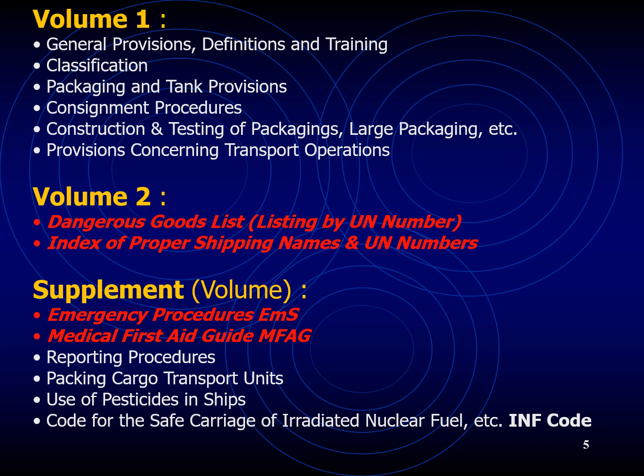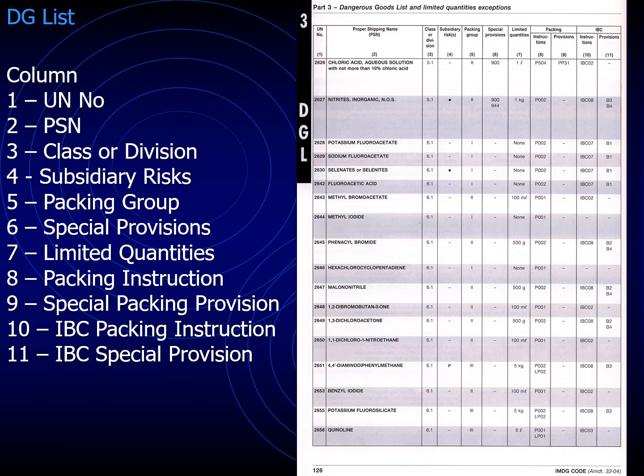The supplement is the third section apart from the two volumes. It provides other important information you need to be very familiar with, such as emergency procedures, medical first aid procedures, reporting procedures, and use of pesticides on ships. If you are a chief officer or senior officer and your ship will be carrying dangerous goods, you also have to confirm from your side whether you are able to maintain safety, fire, or medical procedures and whether you have all the required equipment.